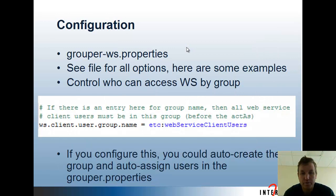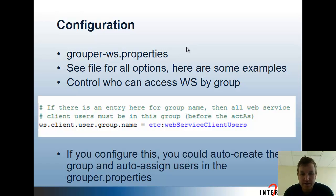To configure the Grouper Web Services, the settings are in the grouper-ws.properties. You can look in that file for all the options. You can control who has access to the web services by group by setting ws.client.user.group.name to some group name. If you configure this, you can also auto-create that group and auto-assign users in the grouper.properties, to help bootstrap the system and make sure everything is configured for new environments.